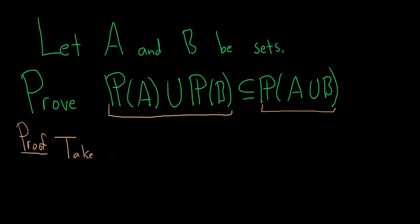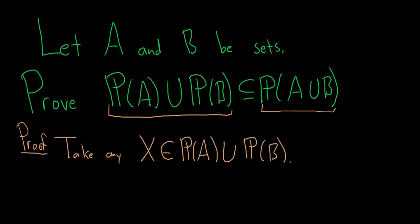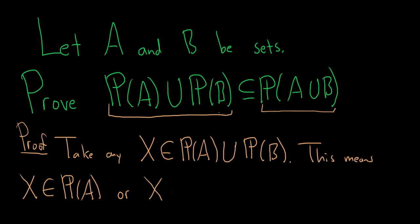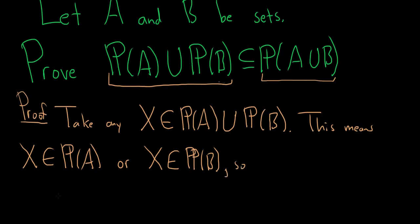Take any X in the power set of A union the power set of B. The next thing to do is to write down what this actually means. If X is in the union, this means that X is in the power set of A or X is in the power set of B, using simply the definition of union. So in this case, it means that X is a subset of A or X is a subset of B.